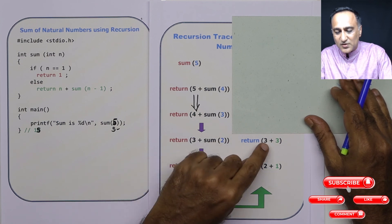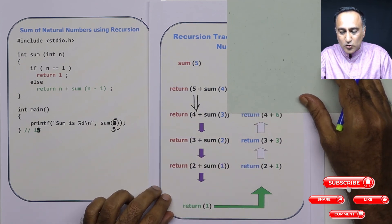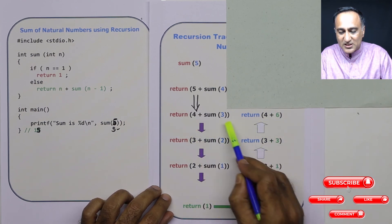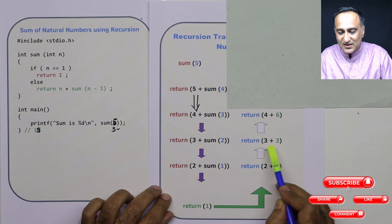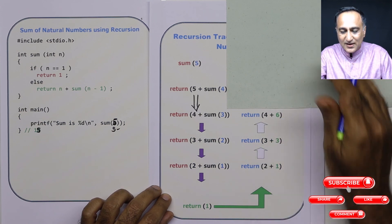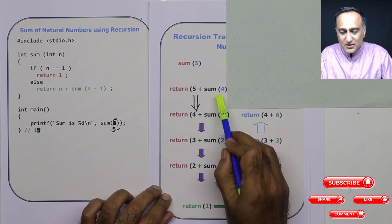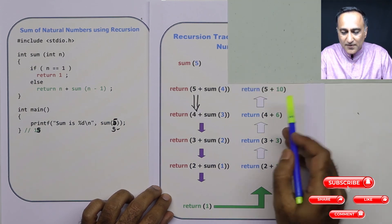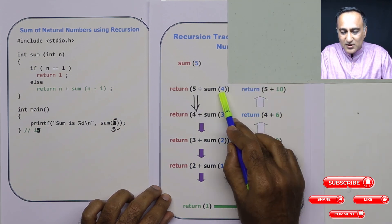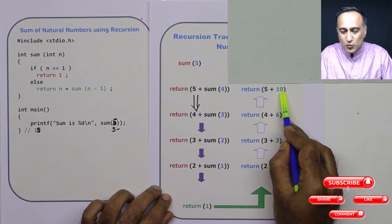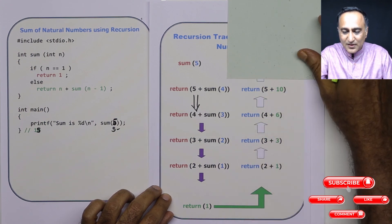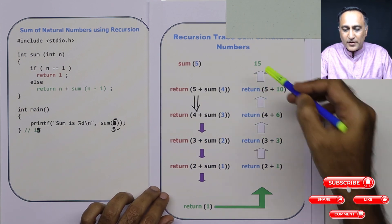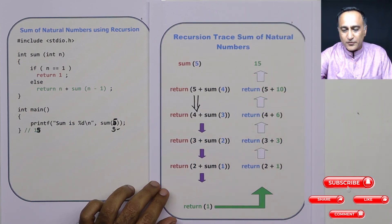Sum of 3 now is 6. So sum of 4 is replaced with 4 plus 6, because I already know sum of 3 is 3 plus 3, which is 6. Then sum of 4 is already 6 plus 4, which is 10. This particular value is replaced with 10. Finally, the sum of all numbers from 1 to 5 happens to be 15.